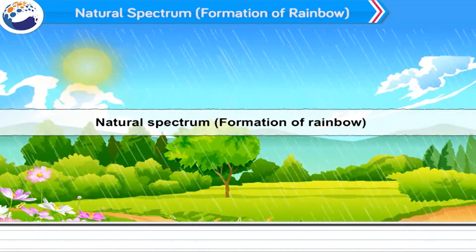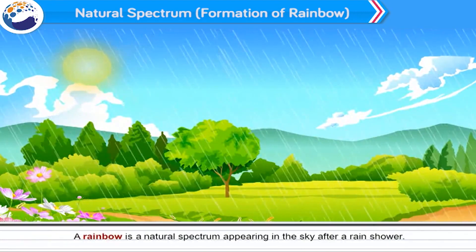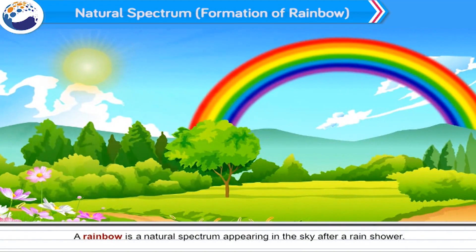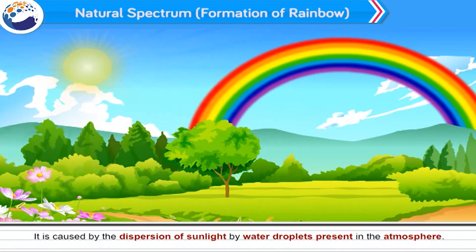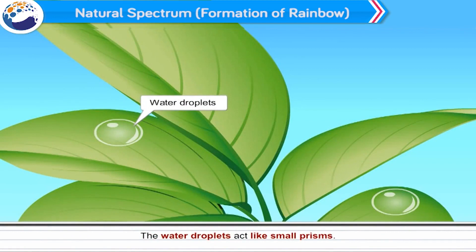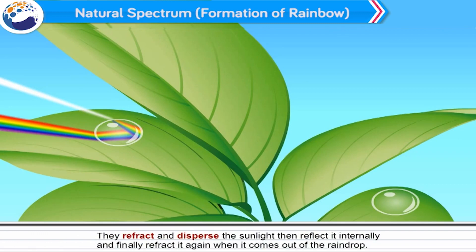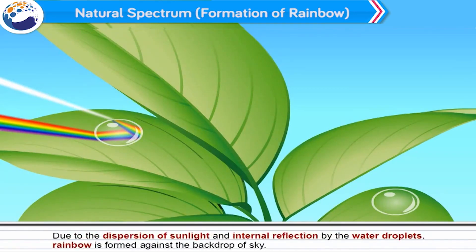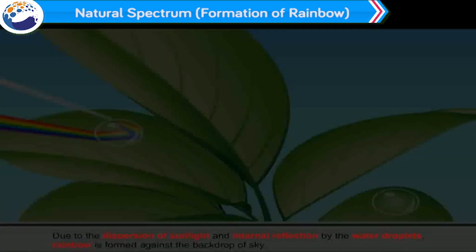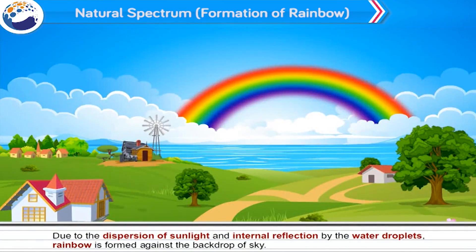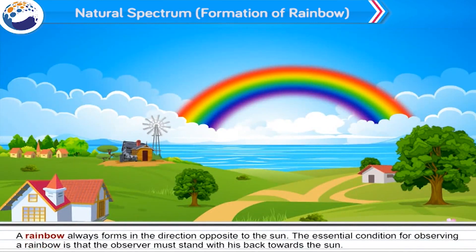Formation of a rainbow: A rainbow is a natural spectrum appearing in the sky after a rain shower. It is caused by the dispersion of sunlight by water droplets present in the atmosphere. The water droplets act like small prisms — they refract and disperse the sunlight, then reflect it internally, and finally refract it again when it comes out of the raindrop. Due to the dispersion of sunlight and internal reflection by the water droplets, a rainbow is formed against the backdrop of the sky. A rainbow always forms in the direction opposite to the sun, and the observer must stand with their back towards the sun.